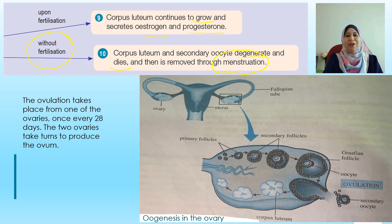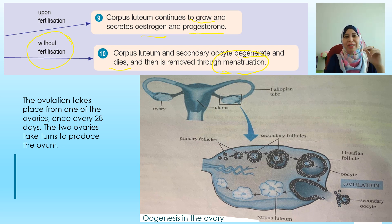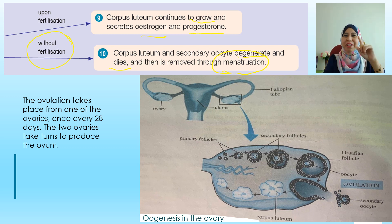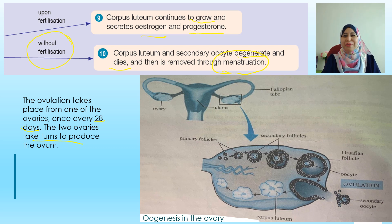Ovulation takes place from one of the ovaries. Remember, girls have two ovaries, so each month ovulation will take place in one of the ovaries alternately, once every 28 days. The two ovaries take turns to produce the ovum.